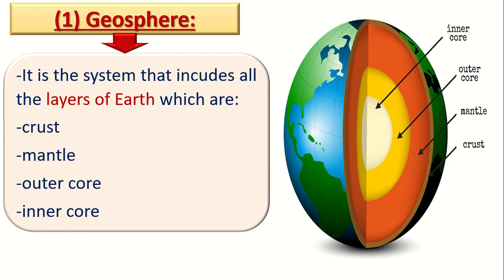Geosphere is the system that includes the Earth's crust and the layers under the Earth's crust. Today let's talk about the layers of the Earth. The Earth consists of 4 layers.